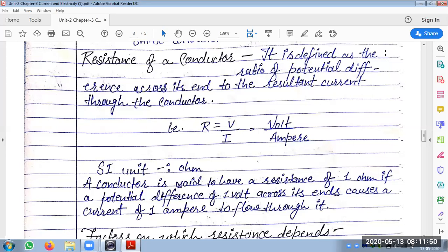What is resistance? It is defined as the ratio of the potential difference across its ends to the resultant current through the conductor. Basically, resistance is potential difference V upon current I.